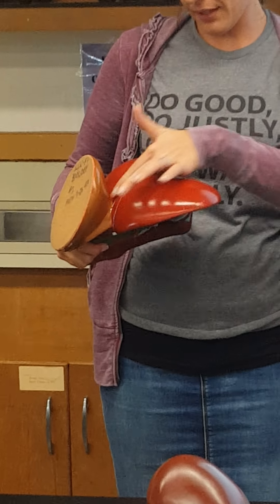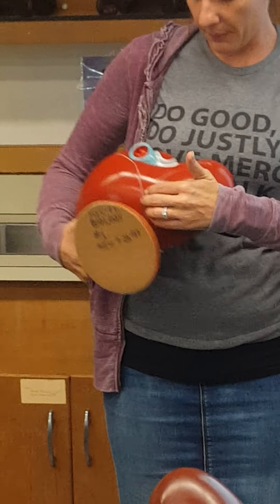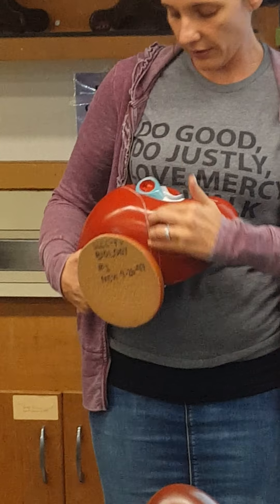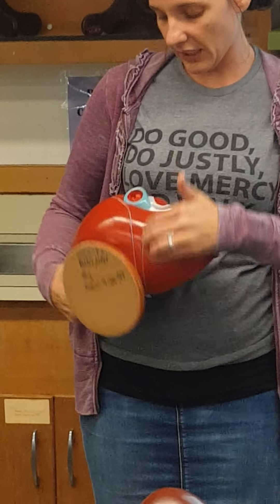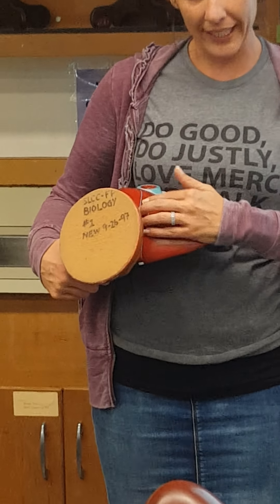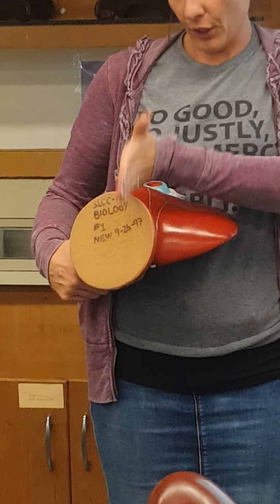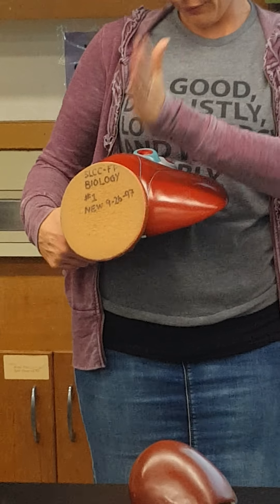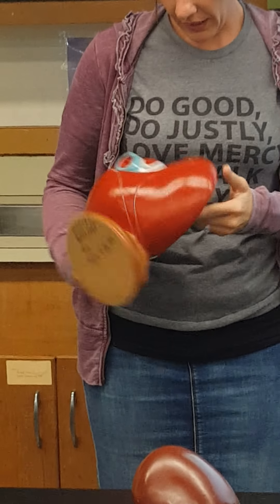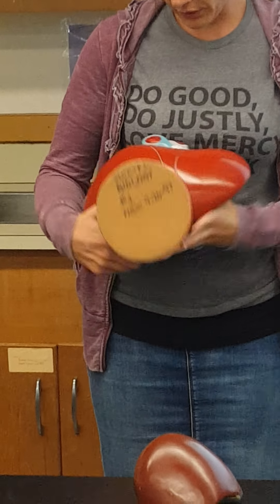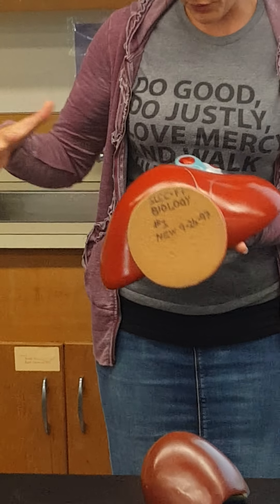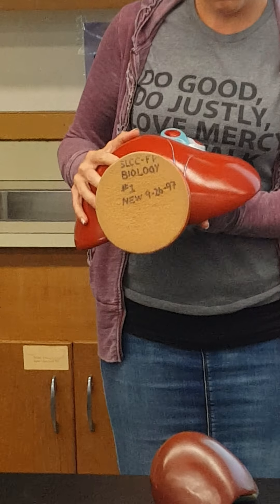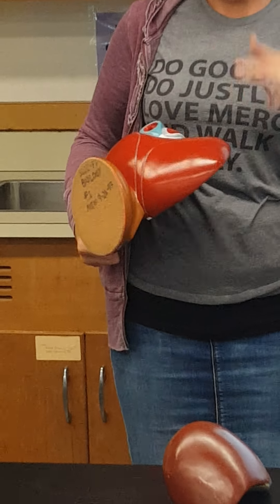When you look at this area labeled as 19, this is going to be the falciform ligament. It's not colored in, but this falciform ligament is what holds the liver in place on the anterior wall and also above to the diaphragm. You can then see the lobes — this is the right lobe, this is the left lobe.